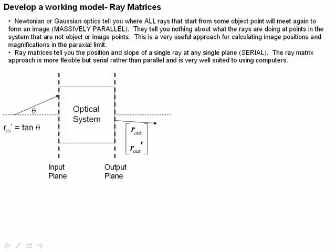We really can't determine at all what our rays of light are doing unless they are at the object or image plane. And this approach we've been using is very useful for calculating image positions and magnifications in the paraxial limit where we really want to talk about images.